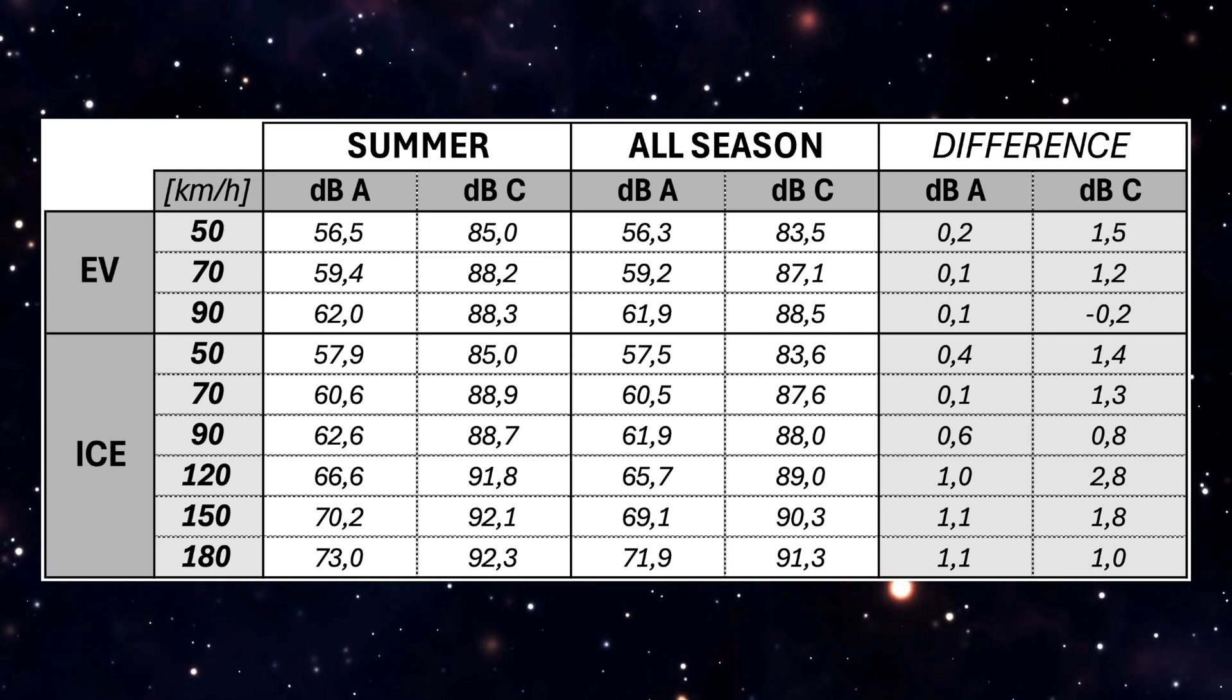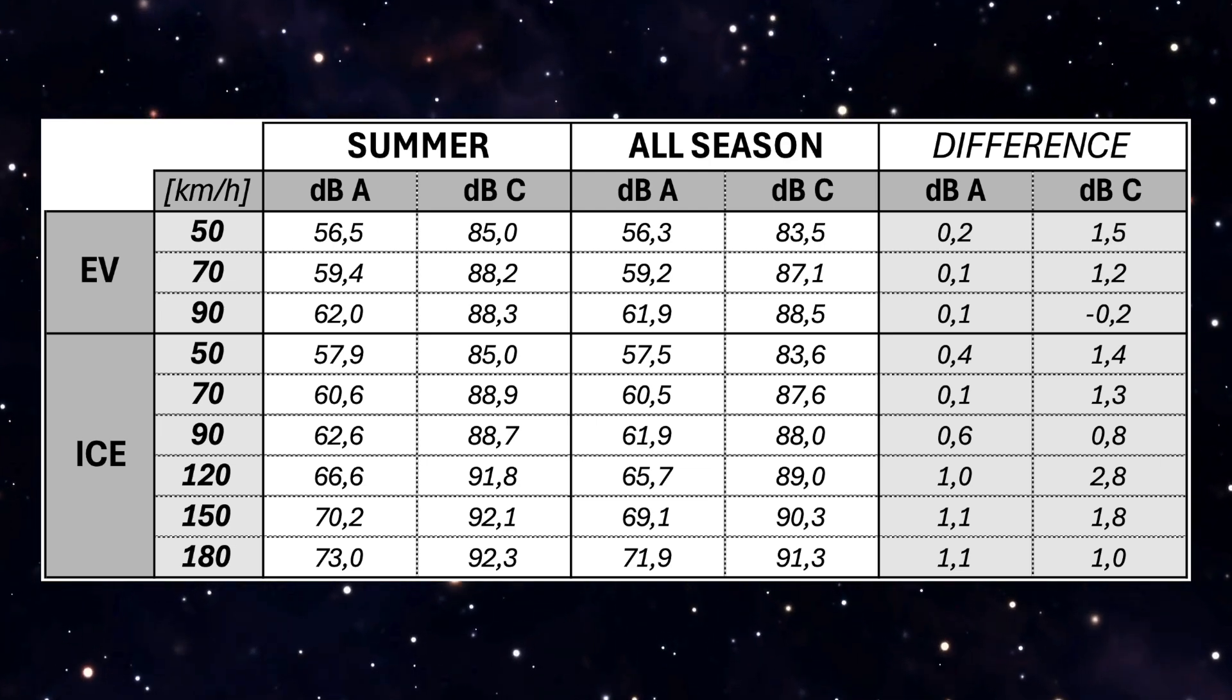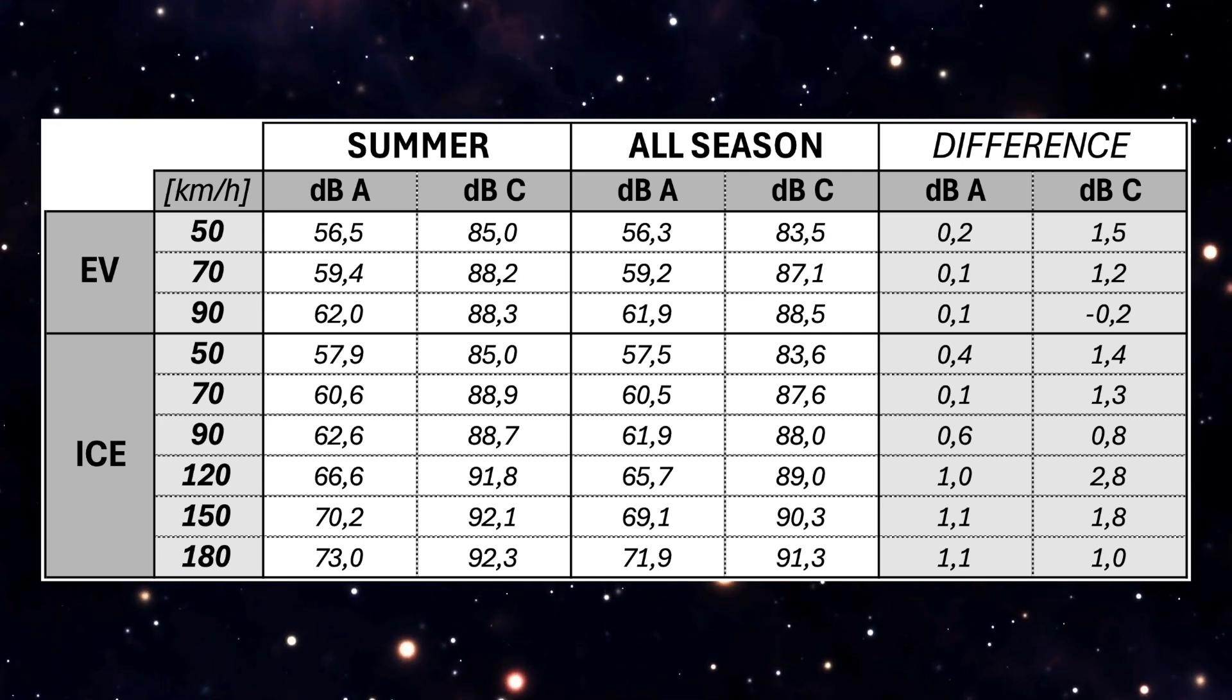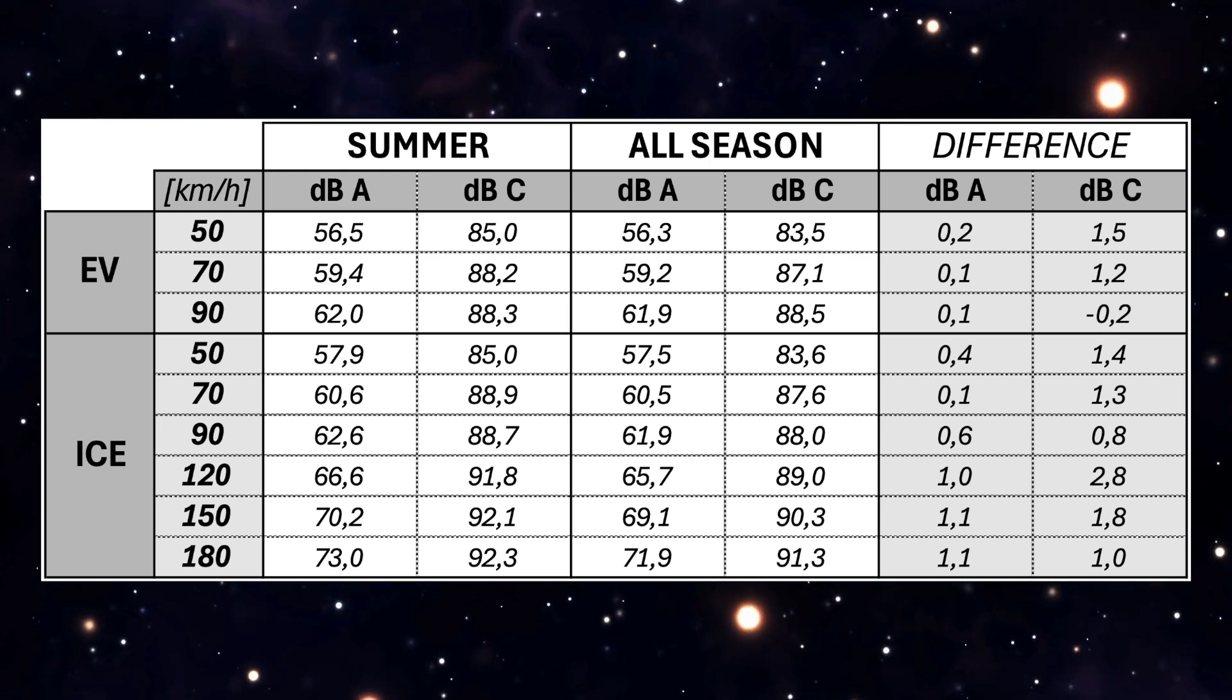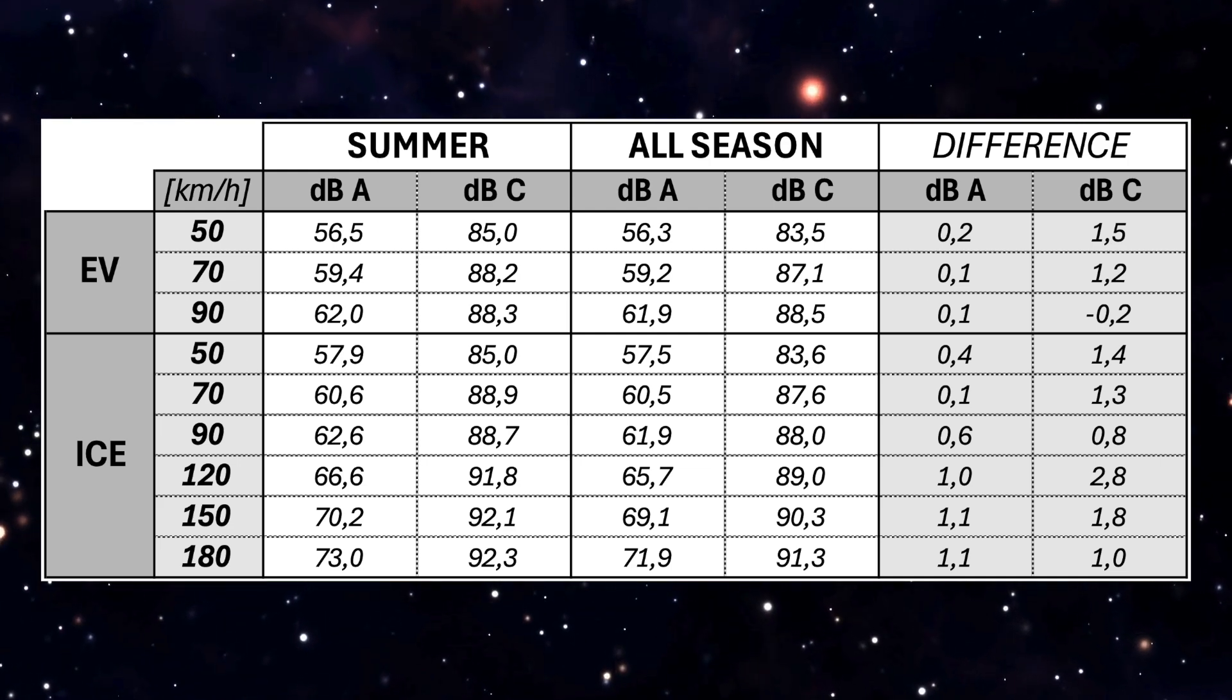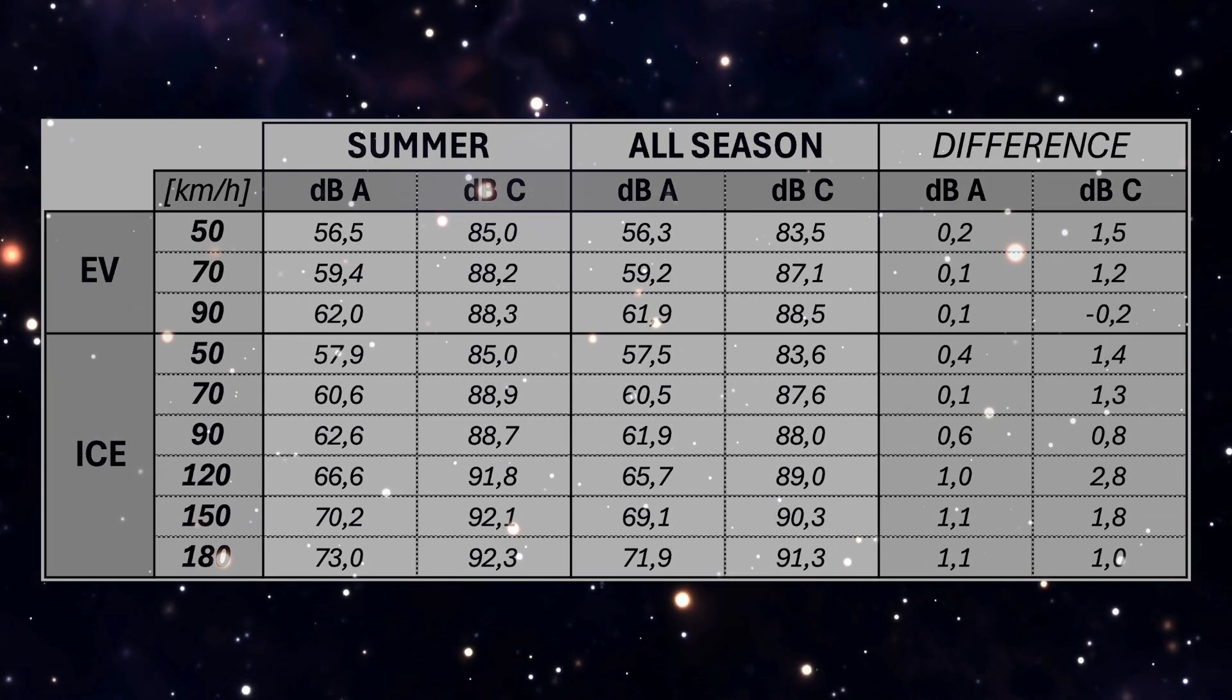However, what's more important, especially if you're unfamiliar with this, check out my explanatory video linked in the top right corner, is the dB C weighted difference, which is more pronounced. The average difference here is 1.3 decibels, aligning well with the noise levels declared on the EU labels for these tires.